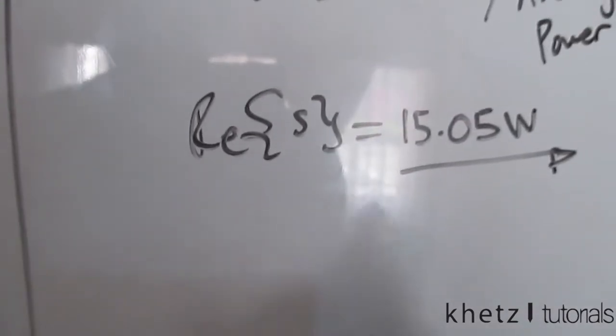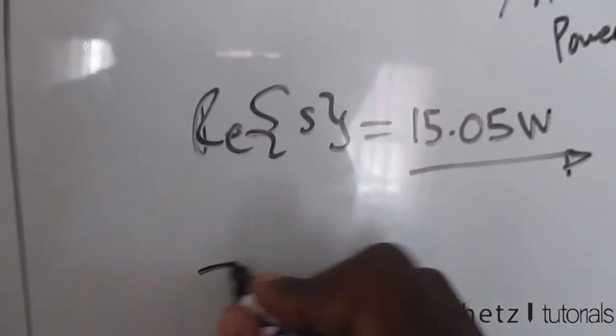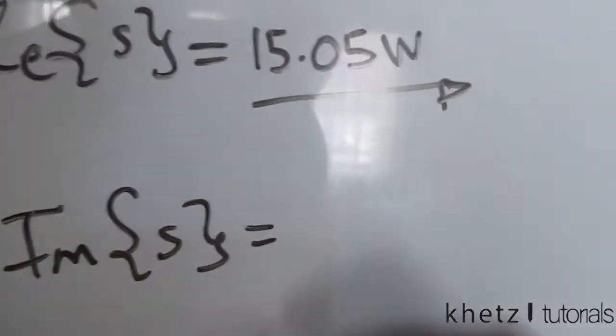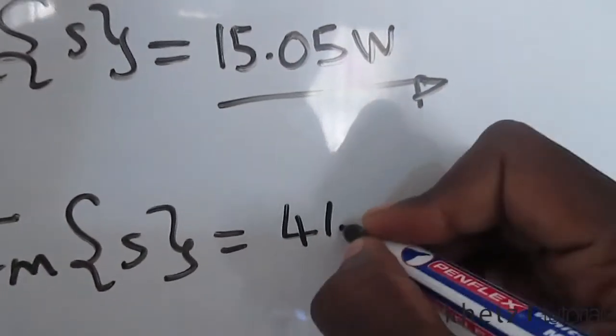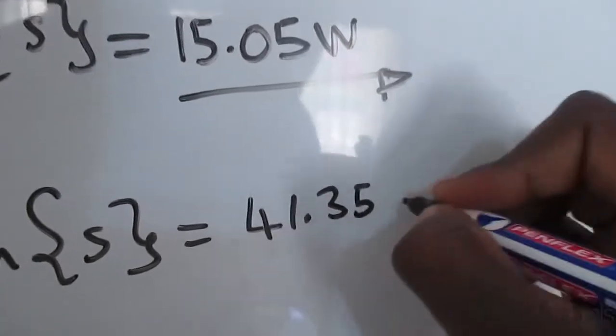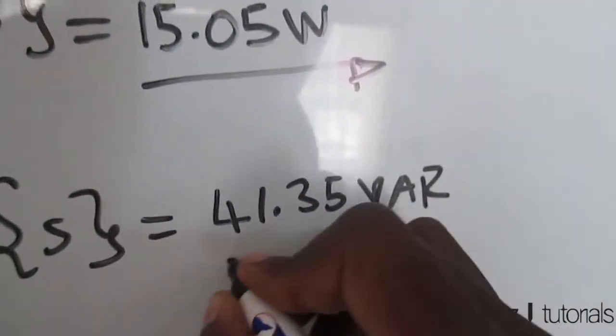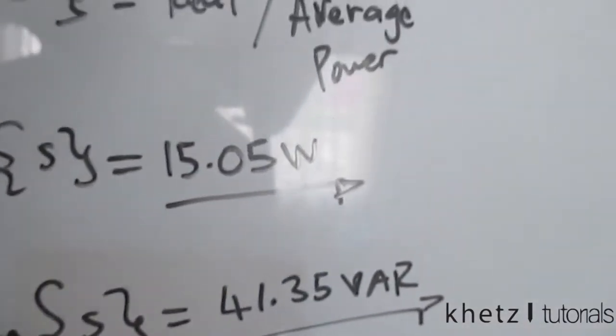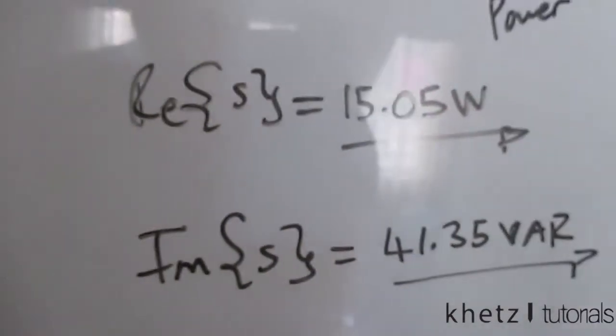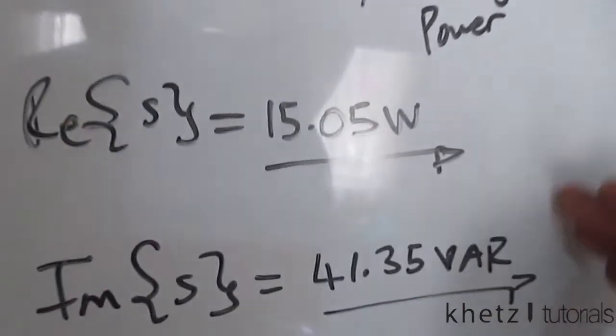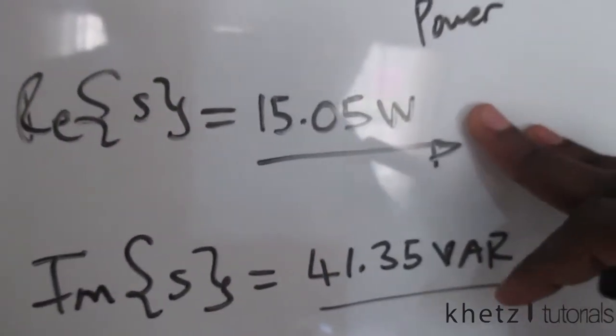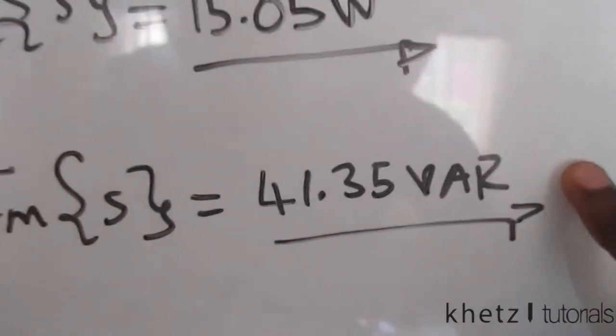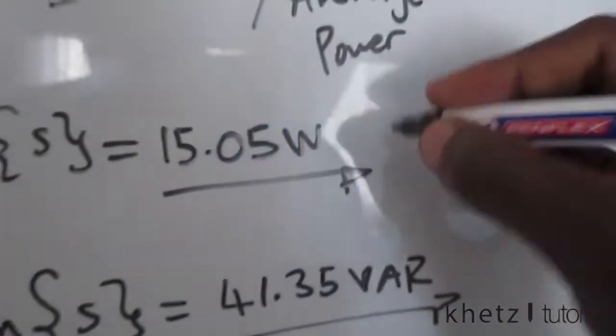The second part is asking for the reactive power, which is basically the imaginary part of that same thing, which is our complex power. And now we have 41.35 VAR - volt ampere reactive - that is the unit for our reactive power. So that is the second part of the question. You just have to take the real part of your complex power as well as the reactive part or the imaginary part.